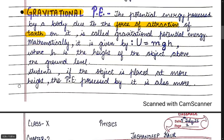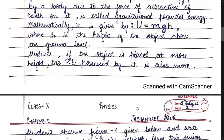Mathematically, gravitational potential energy is given by the formula U = MGH, where H is the height of the object above the ground level. If the object is placed at more height, more is the potential energy possessed by the body.